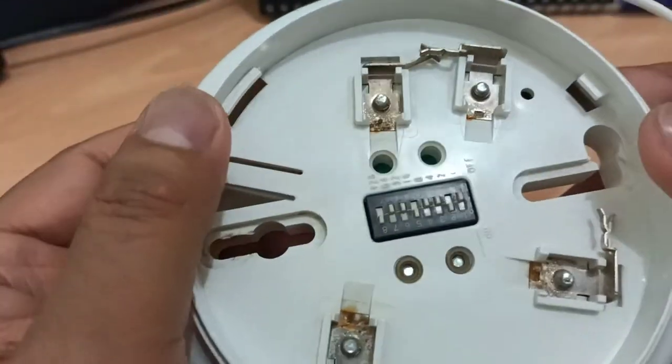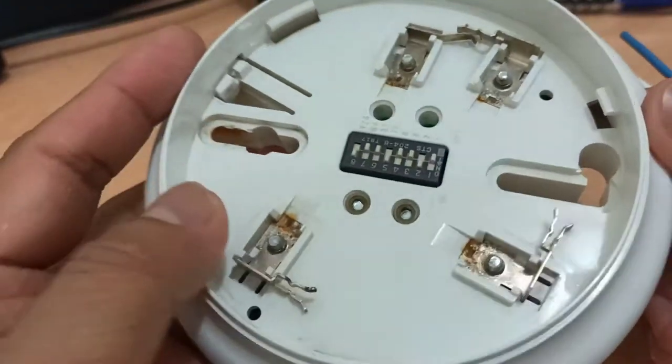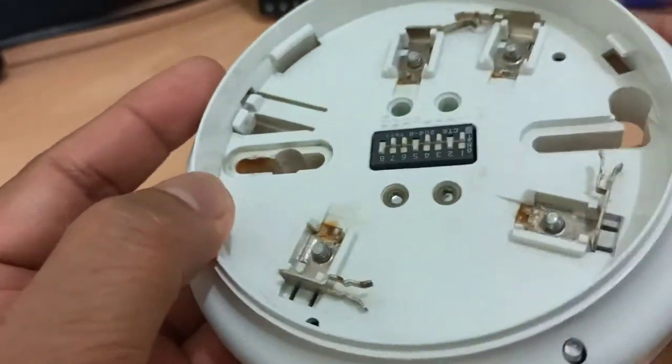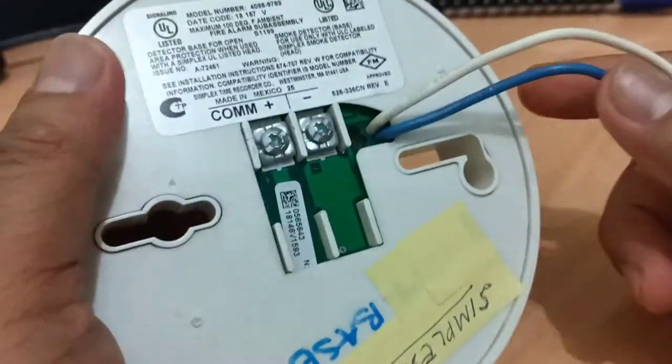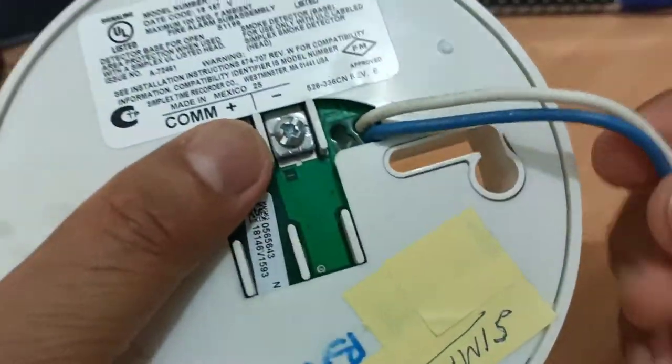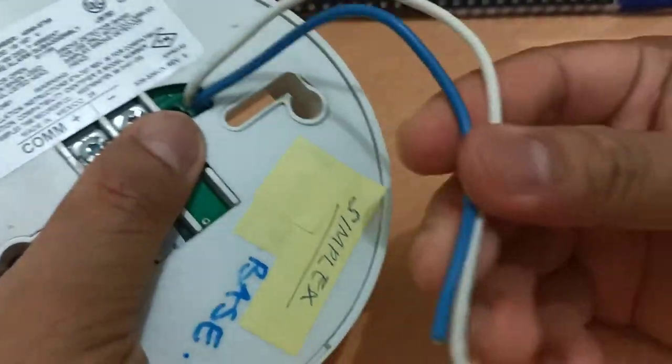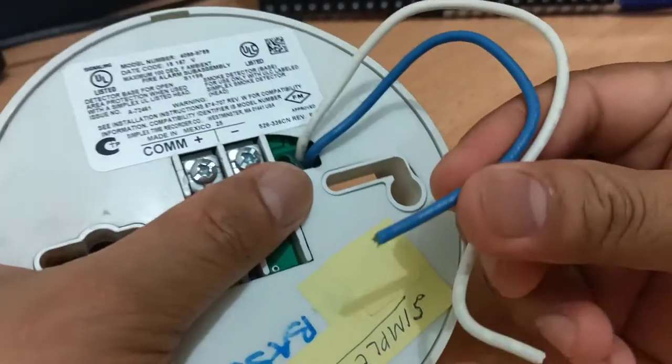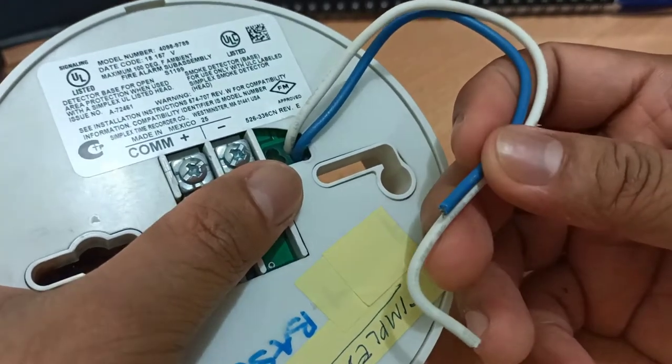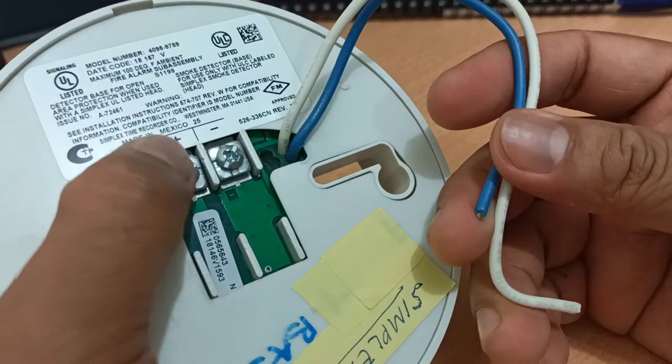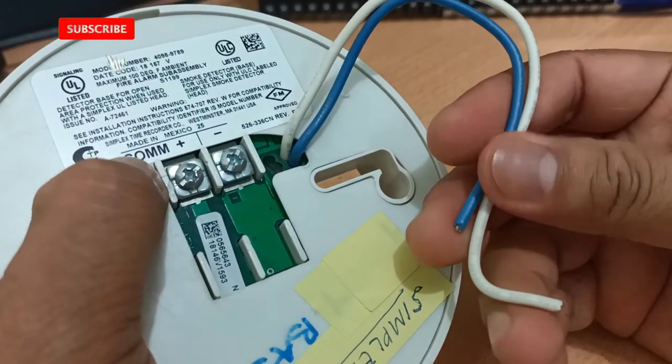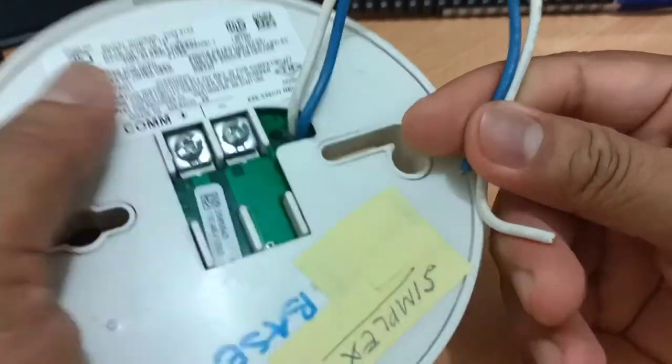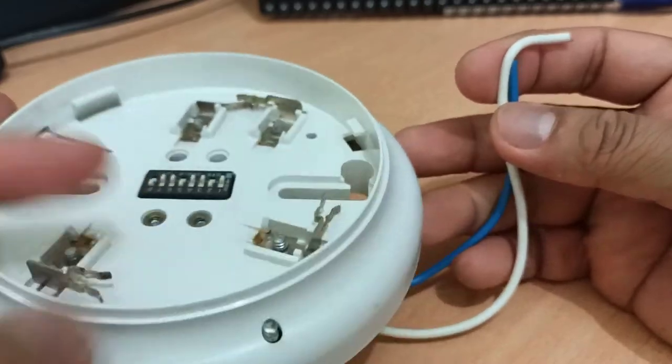So this base guys, we have two kinds of base for Simplex. They are using for the below ceilings and above ceiling. This base is using for above ceiling. So these two cables are using for lead indicator, they are putting in the below ceiling to indicate the light. The smoke detector, in case of fire they will see the light in the ceiling to indicate the fire or the trouble linking.